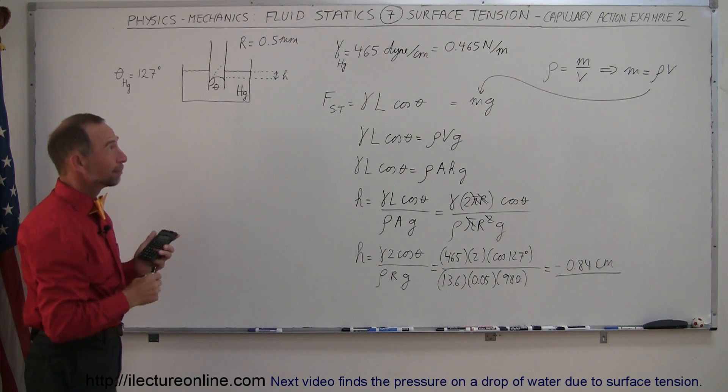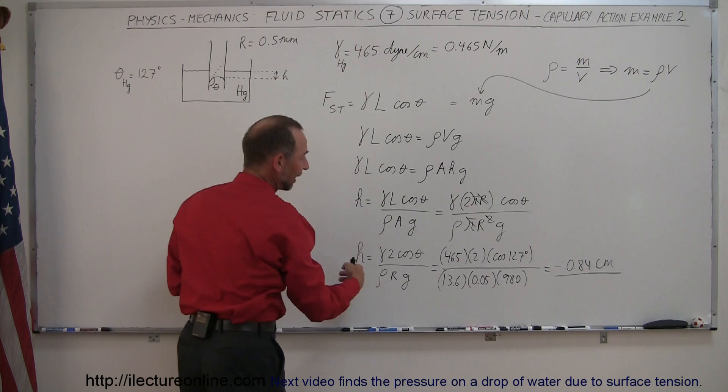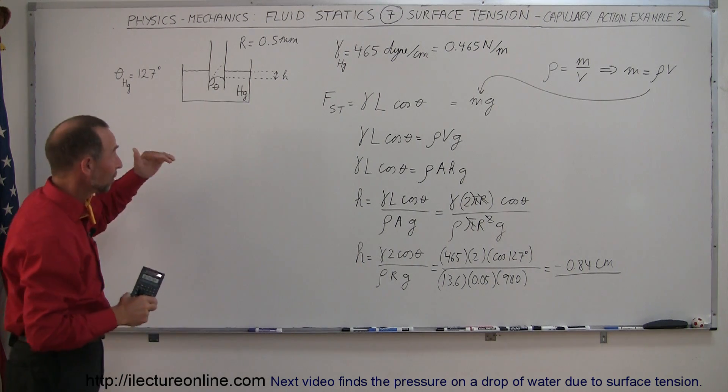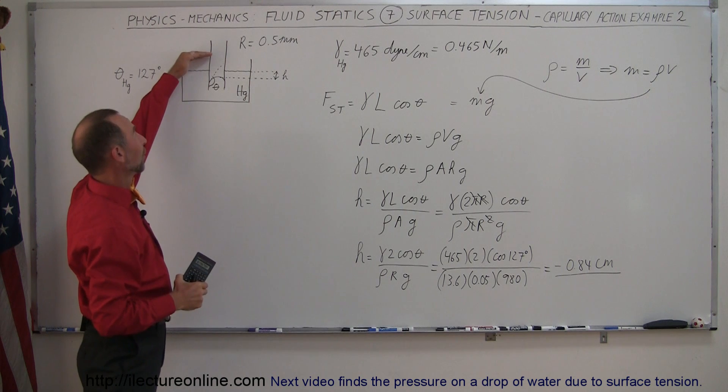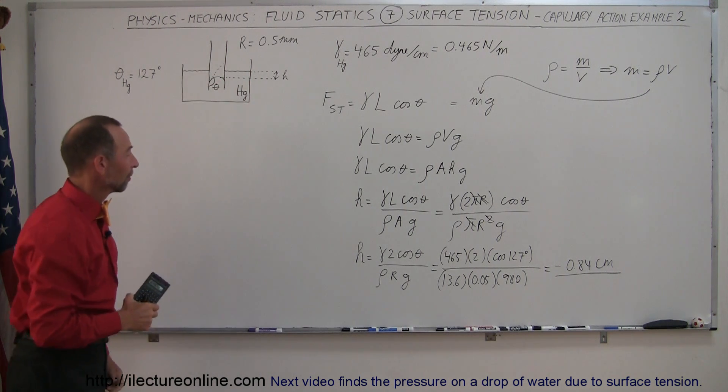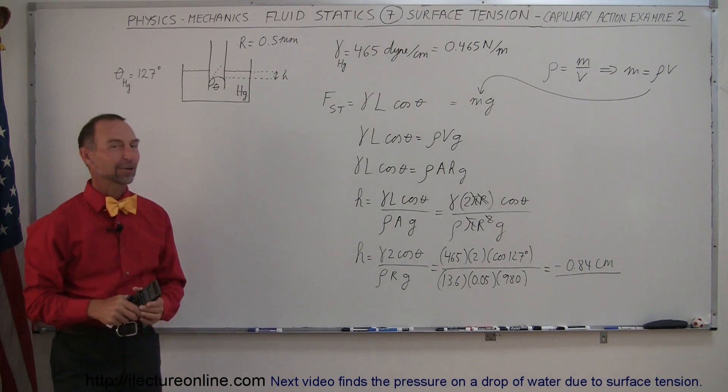Now, if this was water, water would have a smaller coefficient, but much less density, and so water would actually be depressed quite a bit more. If it was depressed in this case, water would be rising up. Mercury is being pushed down by almost a distance of a centimeter. That's how you do that.